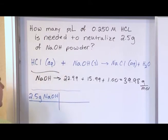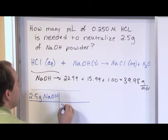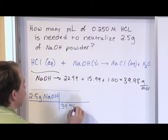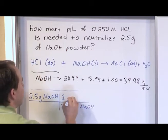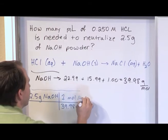So 2.5 grams of NaOH, that's what we start with. And we've just calculated that for every mole of this stuff is 39.98 grams. So if I put 39.98 grams of NaOH, that's going to be 1 mole of NaOH.